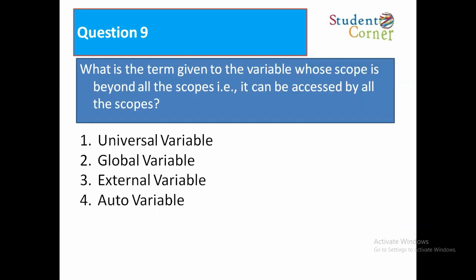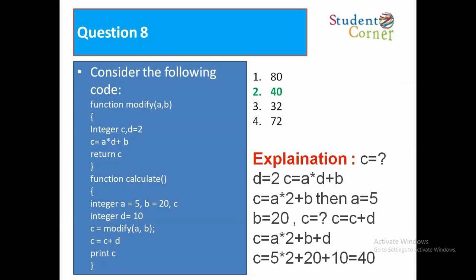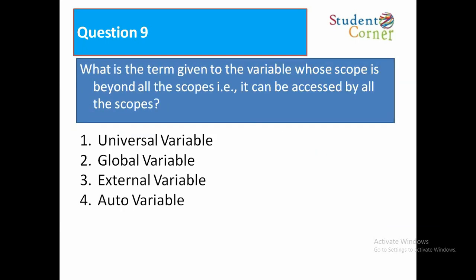What is the term given to the variable whose scope is beyond all the scopes? It can be accessed by all the scopes. Option 1: Universal variable. Option 2: Global variable. Option 3: External variable. Option 4: Auto variable. It is nothing but global variable. Global variable can be accessed anywhere in the program.